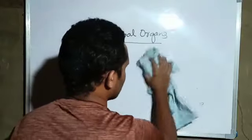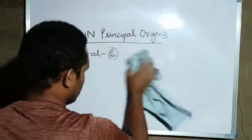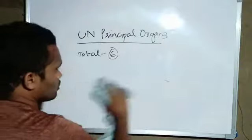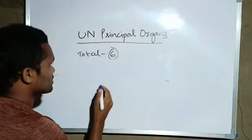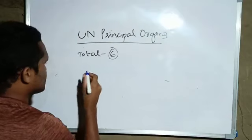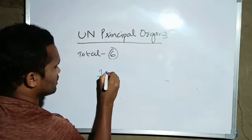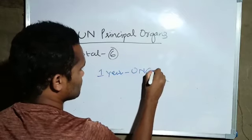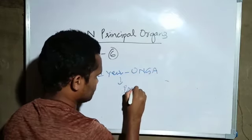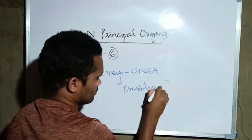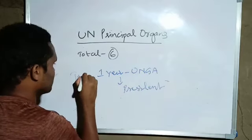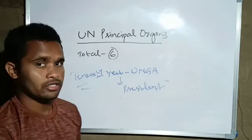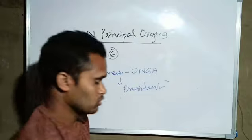Last time during RRB Group D exam, a question came about UN General Assembly president. The tenure is one year, so one year UN General Assembly president tenure is one year.